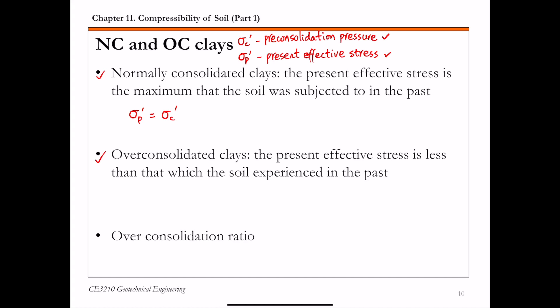For overconsolidated clays or OC clays, sigma p prime is smaller than sigma c prime. Furthermore, we can define this over consolidation ratio we call OCR, which is defined as the ratio between pre-consolidation pressure sigma c prime and present effective stress sigma p prime.